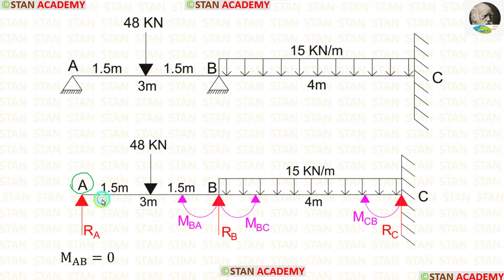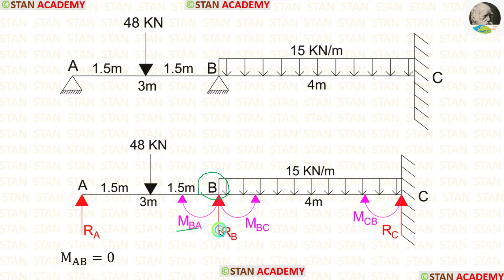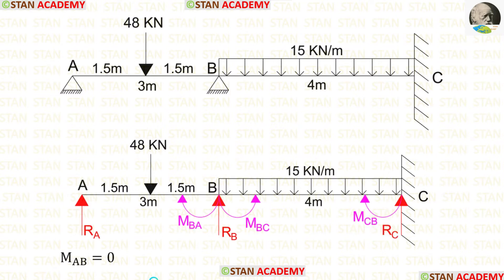At point A there will be no moment because it is a simply supported end, so MAB is equal to 0. At joint B we have to find two moments: MBA and MBC. At point C there is a fixed support, so we will have a moment MCB. So totally we have to find three moments: MBA, MBC, and MCB. We also have to find three vertical reactions: RA, RB, and RC.